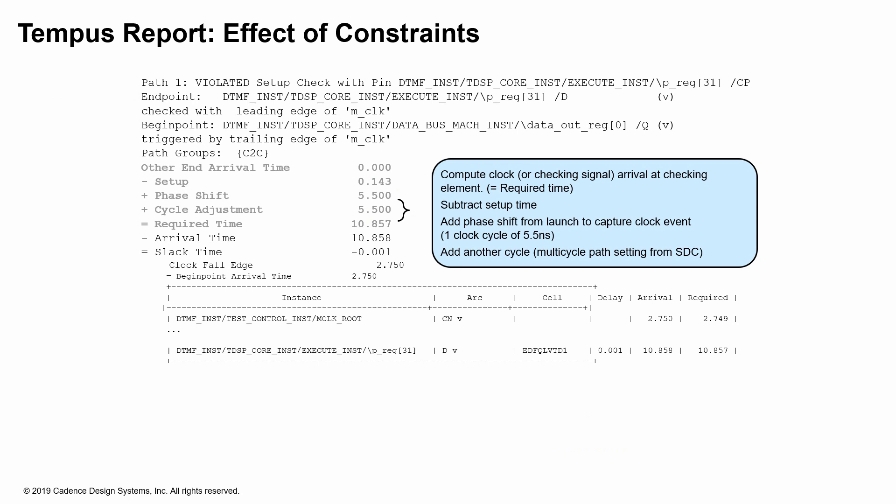By changing the constraints, you end up changing the timing reports. In this case, we added a cycle adjustment of 5.5 nanoseconds, which is one clock cycle. By adding this additional cycle, your required time has actually gone up, and so your slack is almost passing — it's not violating anymore, almost. It is important that you identify the effect of the constraints and that the constraints are not what's causing your design to meet or violate timing incorrectly.